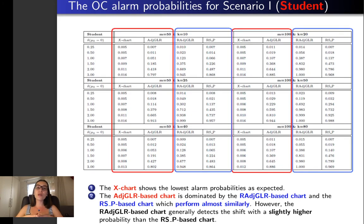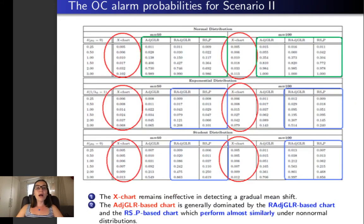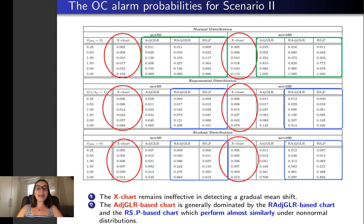As for the student distribution, we observe again that the r-adjusted GLR and RSP techniques are the best overall performing charts. For scenario 2 we observe that the X-chart remains ineffective in detecting a gradual mean shift compared to its non-parametric counterparts even under a normal distribution.